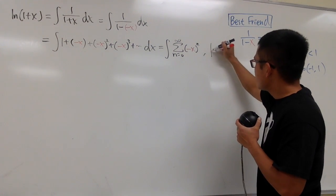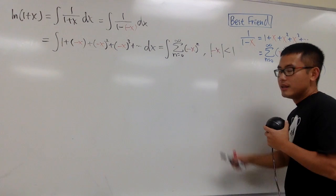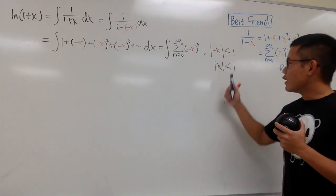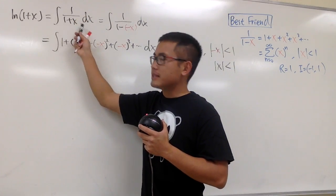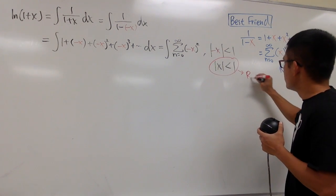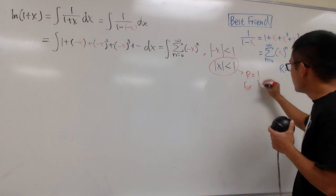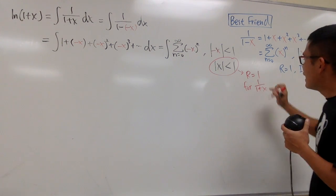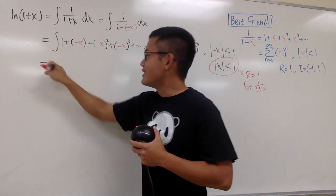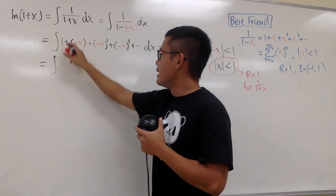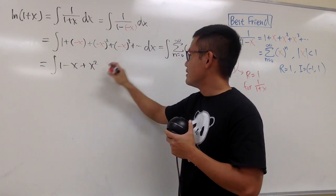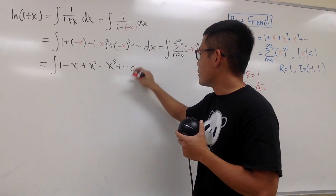We should plug negative x into the convergence condition as well: absolute value of negative x is less than 1, which is the same as absolute value of x is less than 1. In other words, the radius of convergence for 1 over 1 plus x is equal to 1. Now let me simplify the terms: negative x to the second power becomes plus x squared, negative x to the third power becomes minus x cubed. The signs alternate.